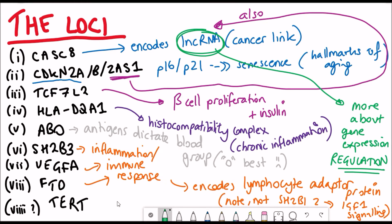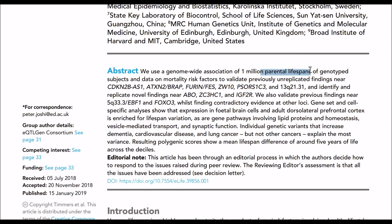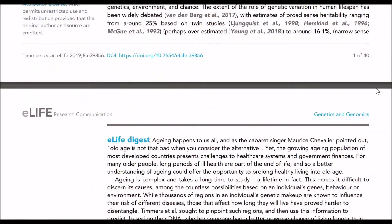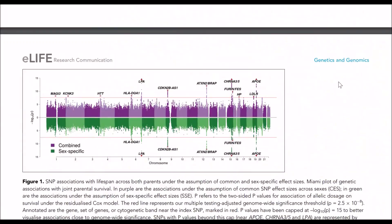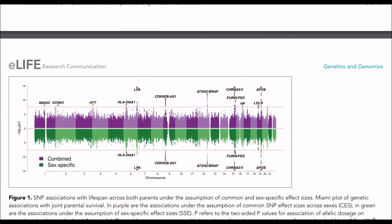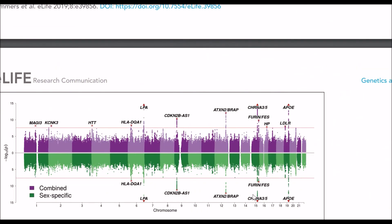Anyhow, back to this list of loci, you may notice that some loci are missing, which you might have thought should be there. So one of these is APOE, in particular the APOE4 variant, which is one of the most significant variants associated with Alzheimer's disease.